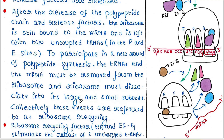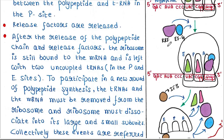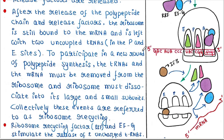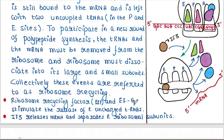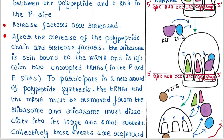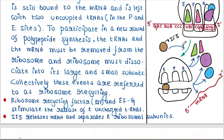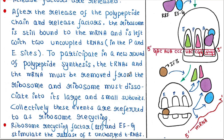Ribosome recycling factor RRF and EFG bind and stimulate the release of the two uncharged tRNAs from the P and E sites. Once the tRNAs are removed, RRF and EFG are also released. Finally, IF3 binds, releases the mRNA, and separates the two ribosomal subunits. All components are now separated and ready to initiate the next round of translation.